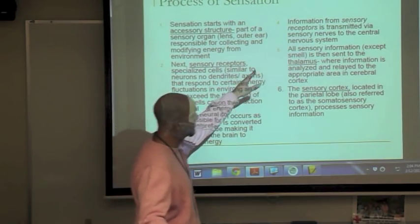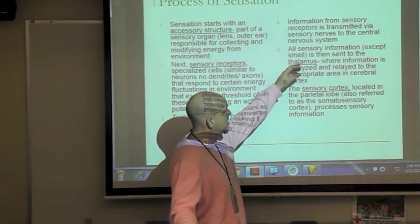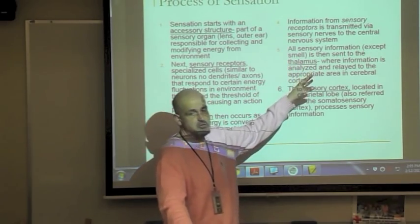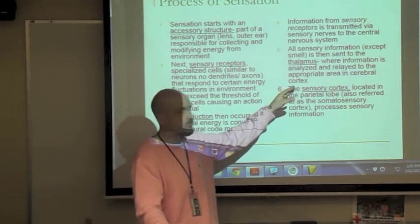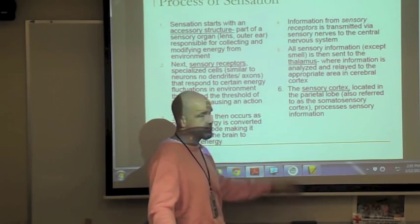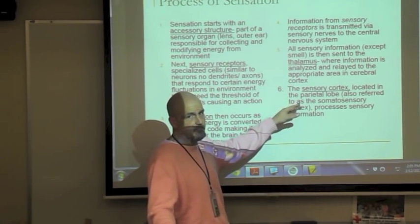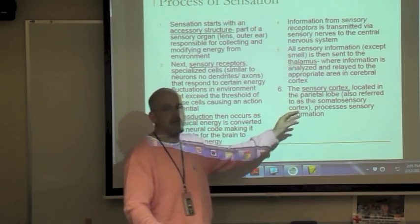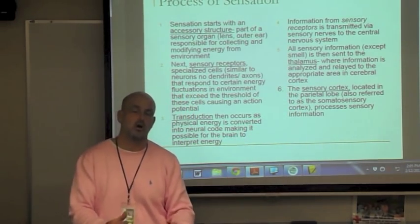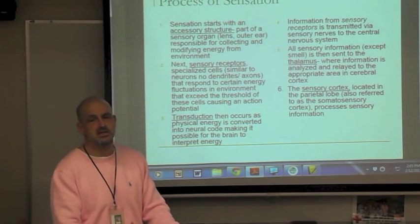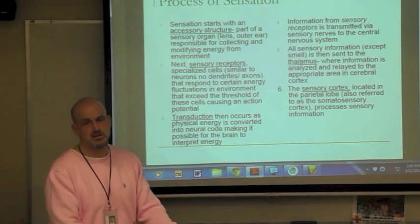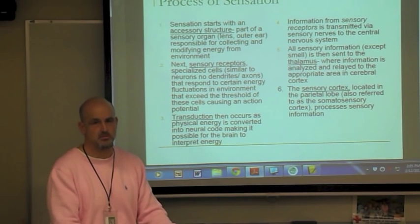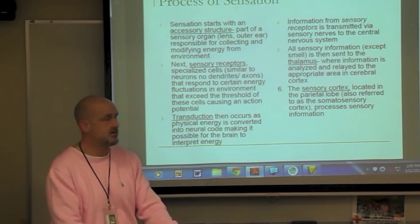Information is then sent from the sensory receptors via sensory nerves to the central nervous system — your brain and spinal cord. All sensory information except smell is then sent to the thalamus, which is like the secretary of a building, telling people where to go. All sensory information goes to the thalamus and is relayed to different parts of the brain to be perceived and interpreted.